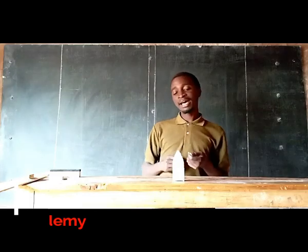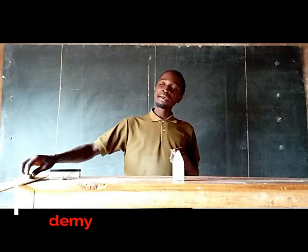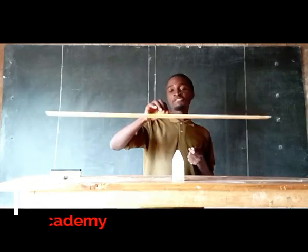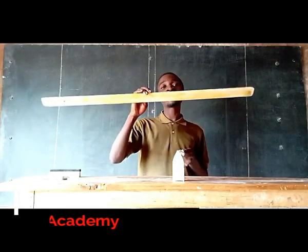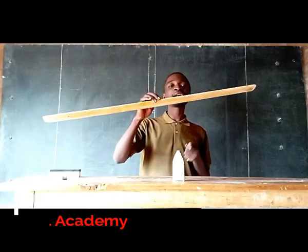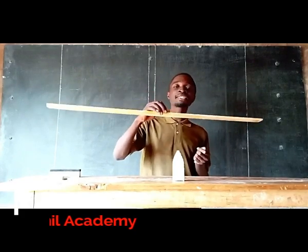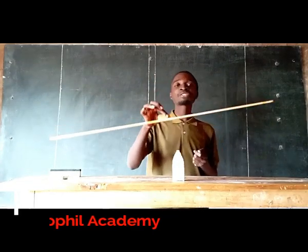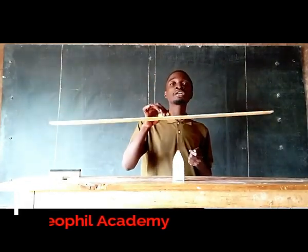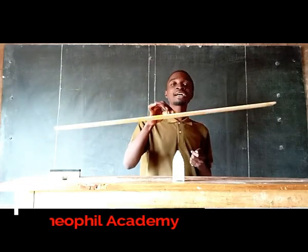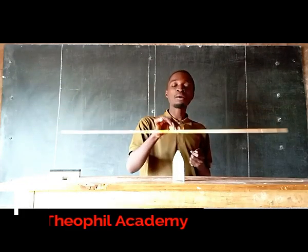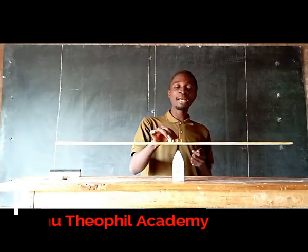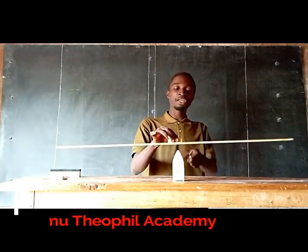First, you will take your knife edge and position it on a table. After that, take your ruler and start balancing it on this knife edge until it balances horizontally, without falling either on the left side or on the right hand side. It should balance horizontally, and after balancing, that is where you are going to note the center of gravity — the mark where the ruler balances, the mark which touches the balancing point, the knife edge.